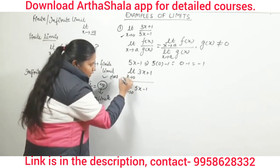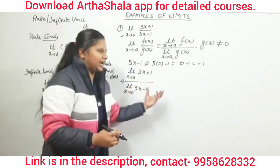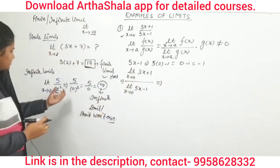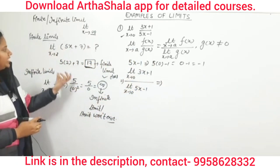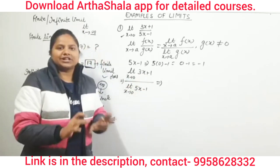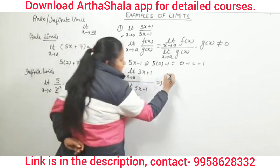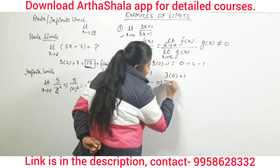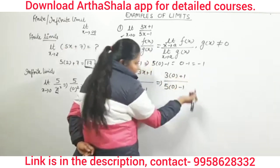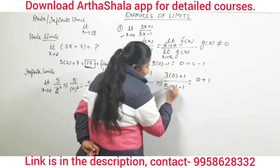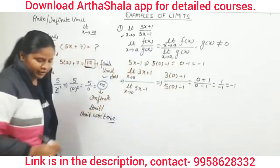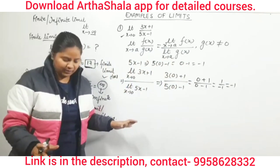Since the denominator condition is satisfied, we apply the quotient rule: limit x→0 of (3x+1) divided by limit x→0 of (5x−1). Since no further manipulation is needed, we simply substitute x = 0. We get: 3(0) + 1 = 1 in the numerator, and 5(0) − 1 = −1 in the denominator, giving us 1/(−1) = −1. That was our first example.